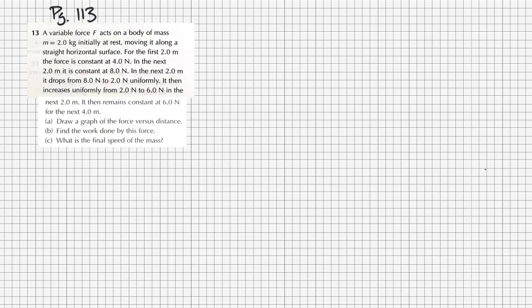Okay, so question number 13 says we have a variable force that is going to act on a 2 kilogram mass. Reading through this, it's a constant force, then it changes, then constant again. I'm not going to read through all of that, but basically the one thing it asks us to do is draw a graph of the force versus distance, then we'll find how much work is done by this force, and then what's the final speed of the mass.